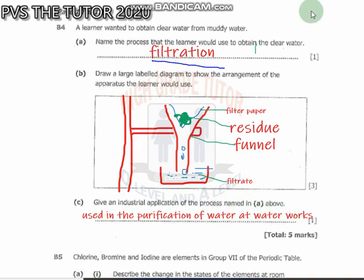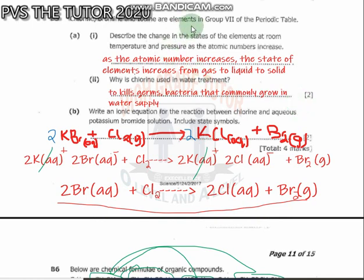Chlorine, bromine, and iodine are elements in group seven of the periodic table. Describe the changes in the states of the elements at room temperature and pressure as atomic numbers increase. As atomic numbers increase, the state of elements increases from gas to liquid then to solid. Chlorine is a gas, bromine is a liquid, and iodine is a black solid. As you go down and as atomic number increases, there is a change from gas to liquid then to solid.